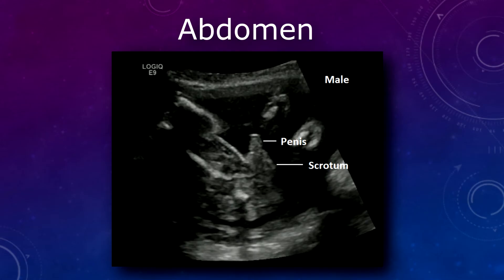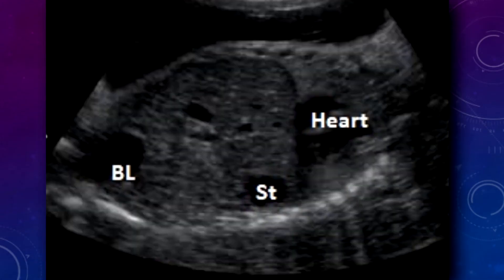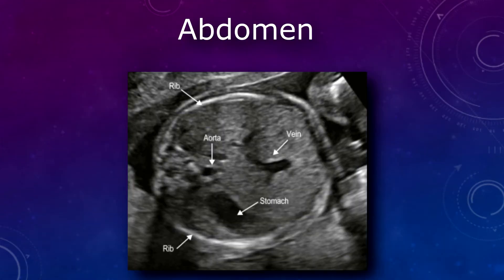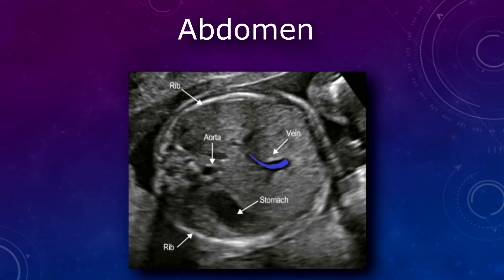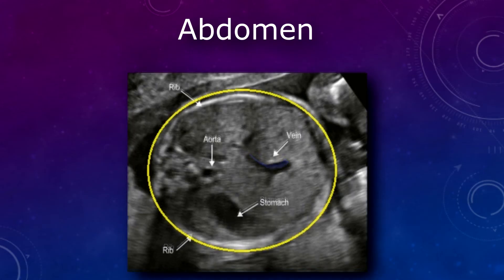Next up is the abdomen. In the abdomen, you have your third measurement, which is the abdominal circumference. You can also do a coronal view of the fetal thorax and abdomen to get the heart, bladder, and stomach view — you can rule out things like heterotaxy or situs inversus. Once you're transverse on the abdomen, above the level of the cord insertion, you want to get the umbilical vein becoming the portal vein, which forms a J-like shape, along with the spine, liver, and stomach. Here you can measure the abdominal circumference.